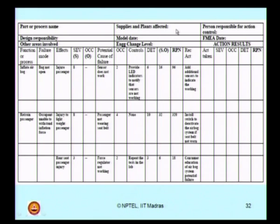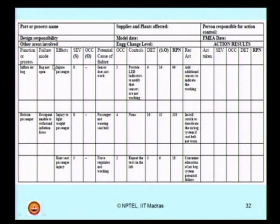Here I have a sample which is filled up for the exercise I just discussed. For example, one of the functions I am selecting here is inflate airbag. The failure mode will be the airbag does not open at all. The effect of this — if the airbag does not open on impact — it will injure the passenger.